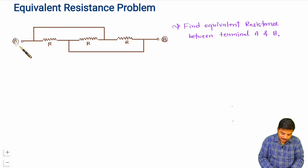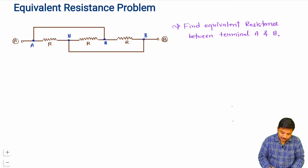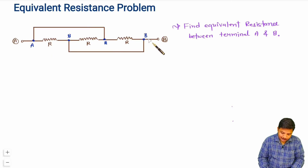This is terminal A, and since this wire is shorted here, this point is also terminal A. This is terminal B, and since this wire is shorted here, this point is also terminal B. Now I will redraw this circuit and then solve for equivalent resistance.